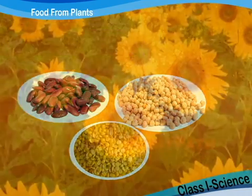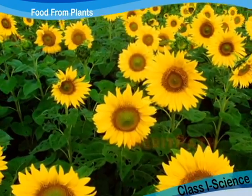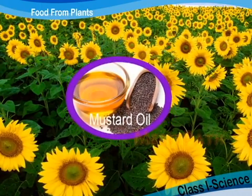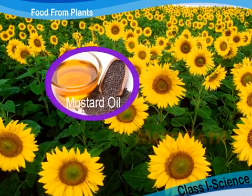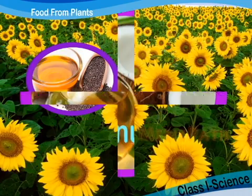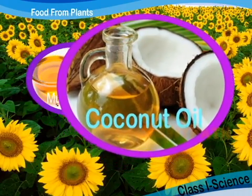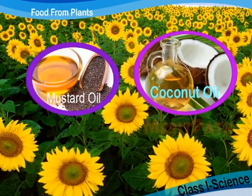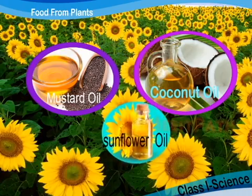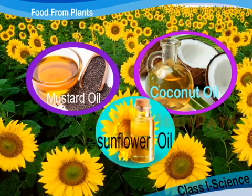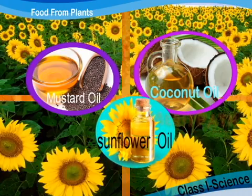Plants also give us cooking oil. For example we get mustard oil from mustard seeds, coconut oil from coconuts, and sunflower oil is obtained from sunflower seeds.